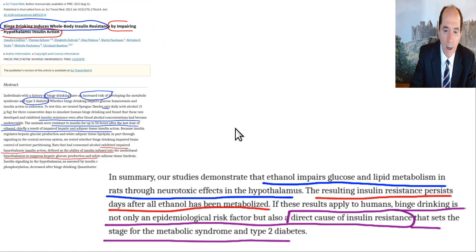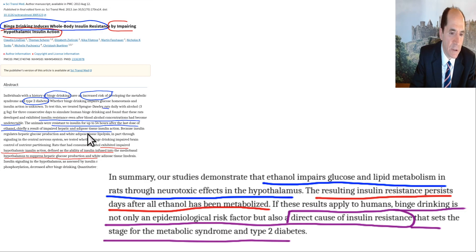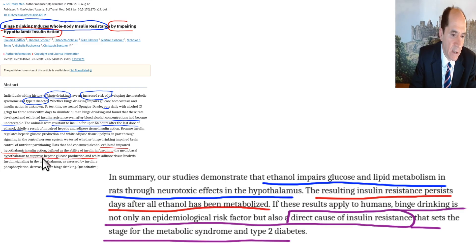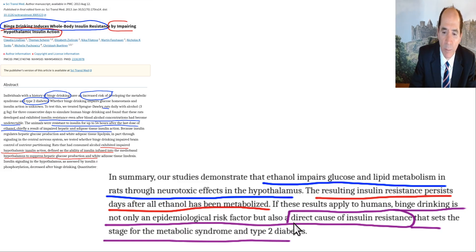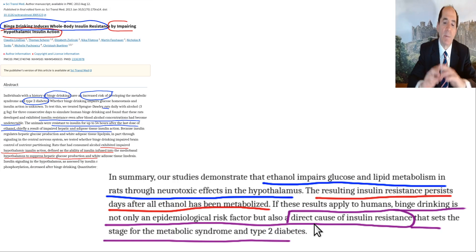Additionally, alcohol causes damage to the hypothalamus, impairing hypothalamic control of insulin. One paper, 'Binge Drinking Increases Risk of Type 2 Diabetes,' found that even after blood alcohol concentrations became undetectable, insulin resistance persisted for up to 54 hours — over two days after the last dose — chiefly due to impaired hepatic and adipose tissue insulin action, plus impaired hypothalamic insulin signaling. In summary, ethanol impairs glucose and lipid metabolism through neurotoxic effects on the hypothalamus, and the resulting insulin resistance persists for days.